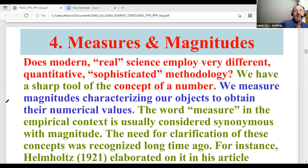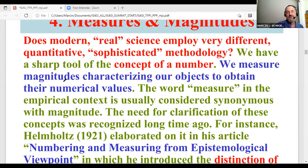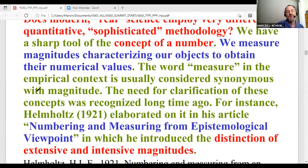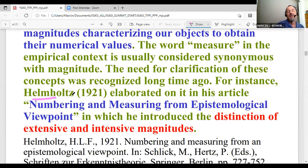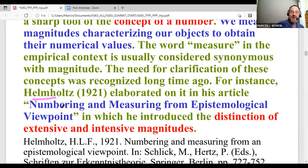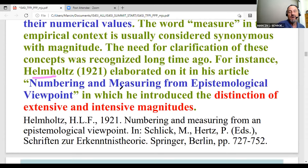We have a sharp tool in the concept of the number. We measure magnitudes characterizing our objects to obtain their numerical values. The word 'measure' in the empirical context is usually considered synonymous with 'magnitude.' The need for clarification of this concept was recognized a long time ago — for instance, Helmholtz considered the issue of numbering and measuring from an epistemological viewpoint, noting it is not as obvious as it looks at first sight.